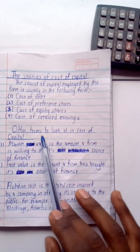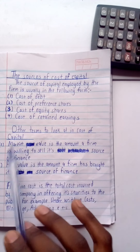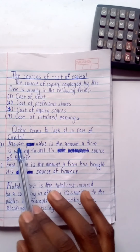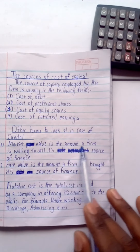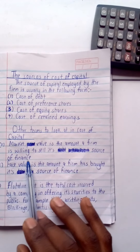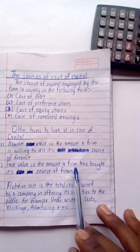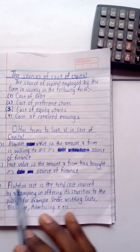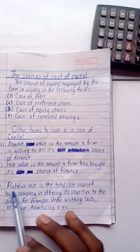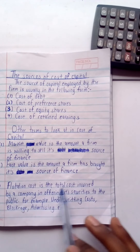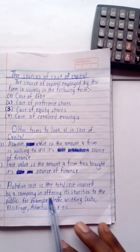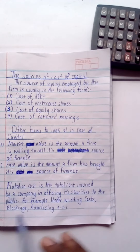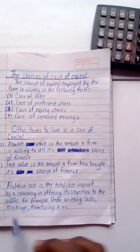We also have other terms to look at in cost of capital. Market value is the amount a firm is willing to sell its source of finance. Face value is the amount a firm has bought its source of finance. Flotation cost is the total cost incurred by a company or firm in offering its securities to the public — for example, underwriting costs, advertising, brokerage, etc.